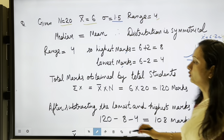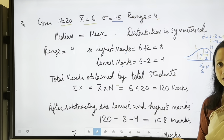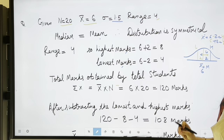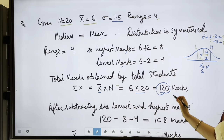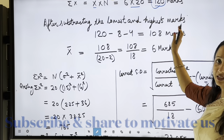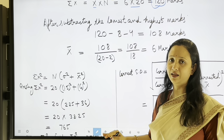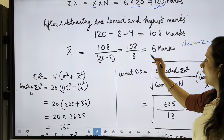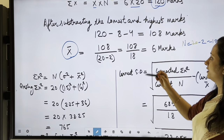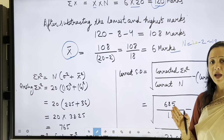Total marks = x̄ × N = 6 × 20 = 120. After removing the lowest (4) and highest (8) marks: new Σx = 120 minus 4 minus 8 = 108. New N = 20 minus 2 = 18. New x̄ = 108 ÷ 18 = 6 marks.